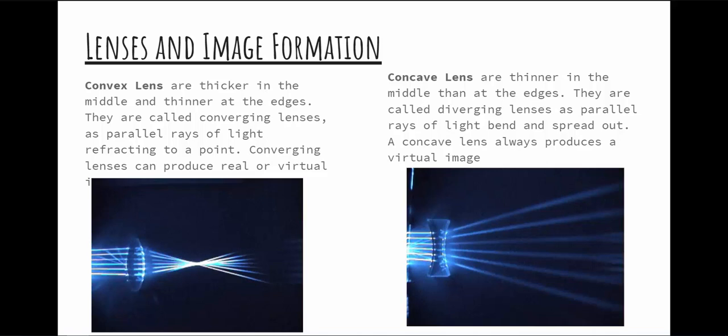Now, talking about lenses and mirrors in particular. A convex lens — I'll call it a converging lens — because you can see how light comes through and converges to a point. A concave lens, or diverging lens, causes light to spread out as it passes through. Converging lenses can make real or virtual images depending on how close the object is to the lens. A diverging lens only makes virtual images.